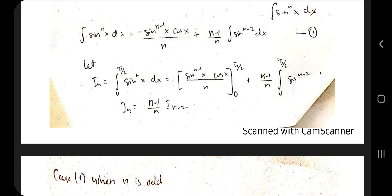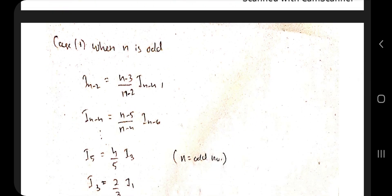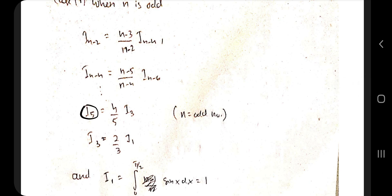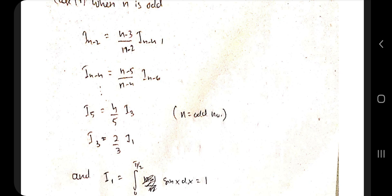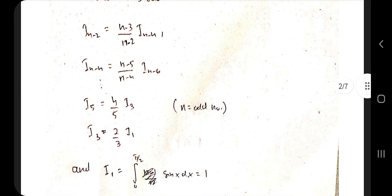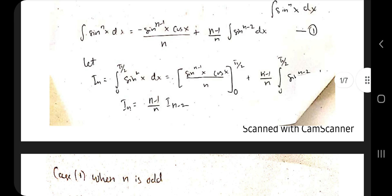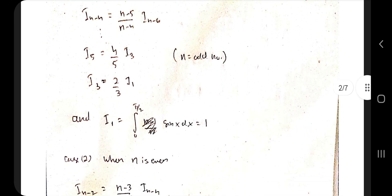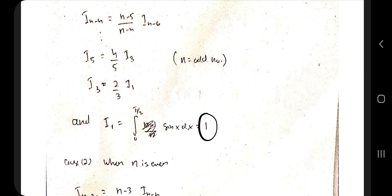For n odd: placing an odd number (say n=5), the formula gives I_5 in terms of I_3, then I_3 in terms of I_1. The pattern decreases by 2 each time: n, n-2, n-4, and so on. I_1 is obtained by substituting n=1, giving the integral of sin(x) with limits 0 to π/2, which equals 1. So when n is odd, I_1 = 1 and we substitute that back.